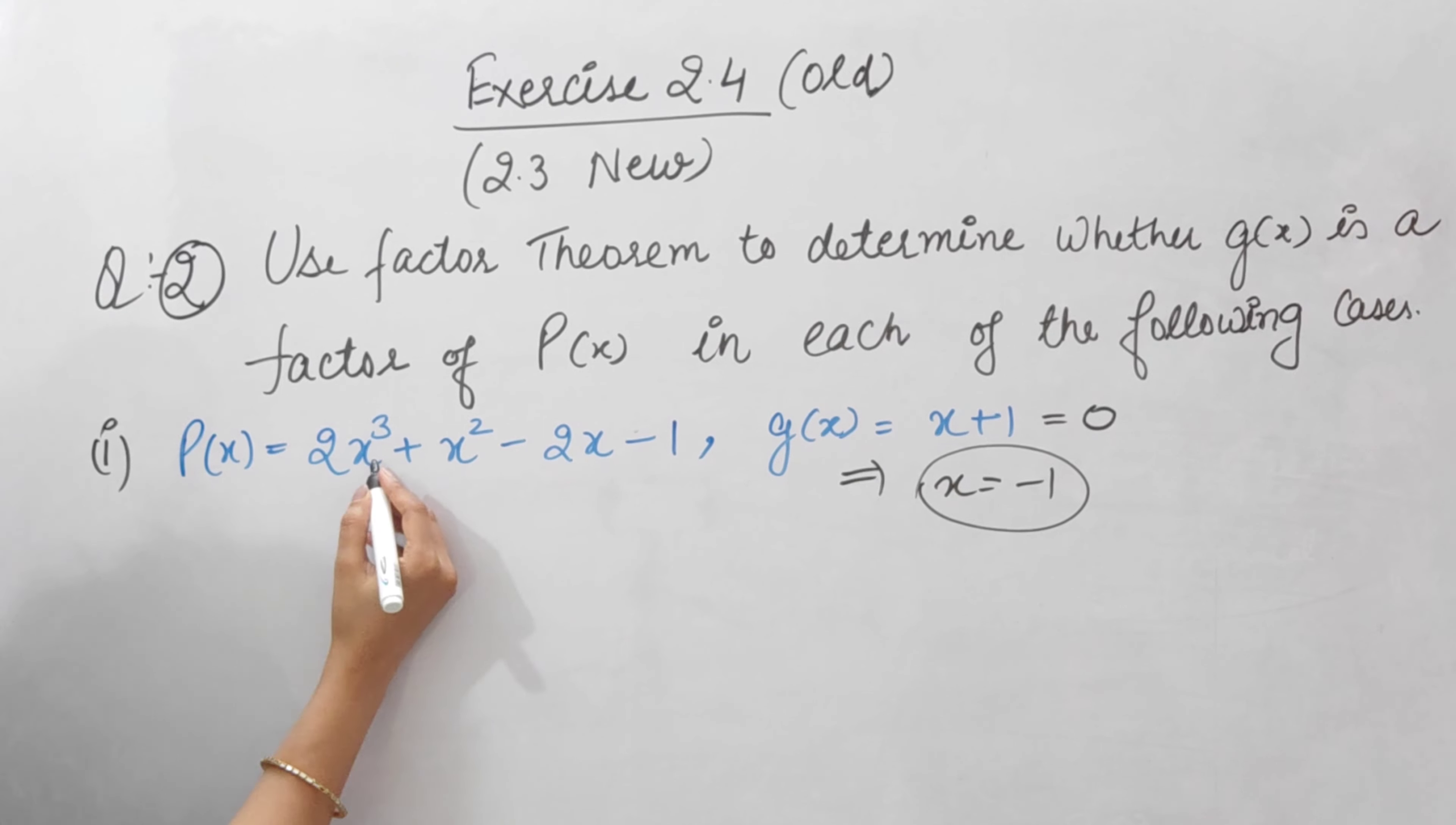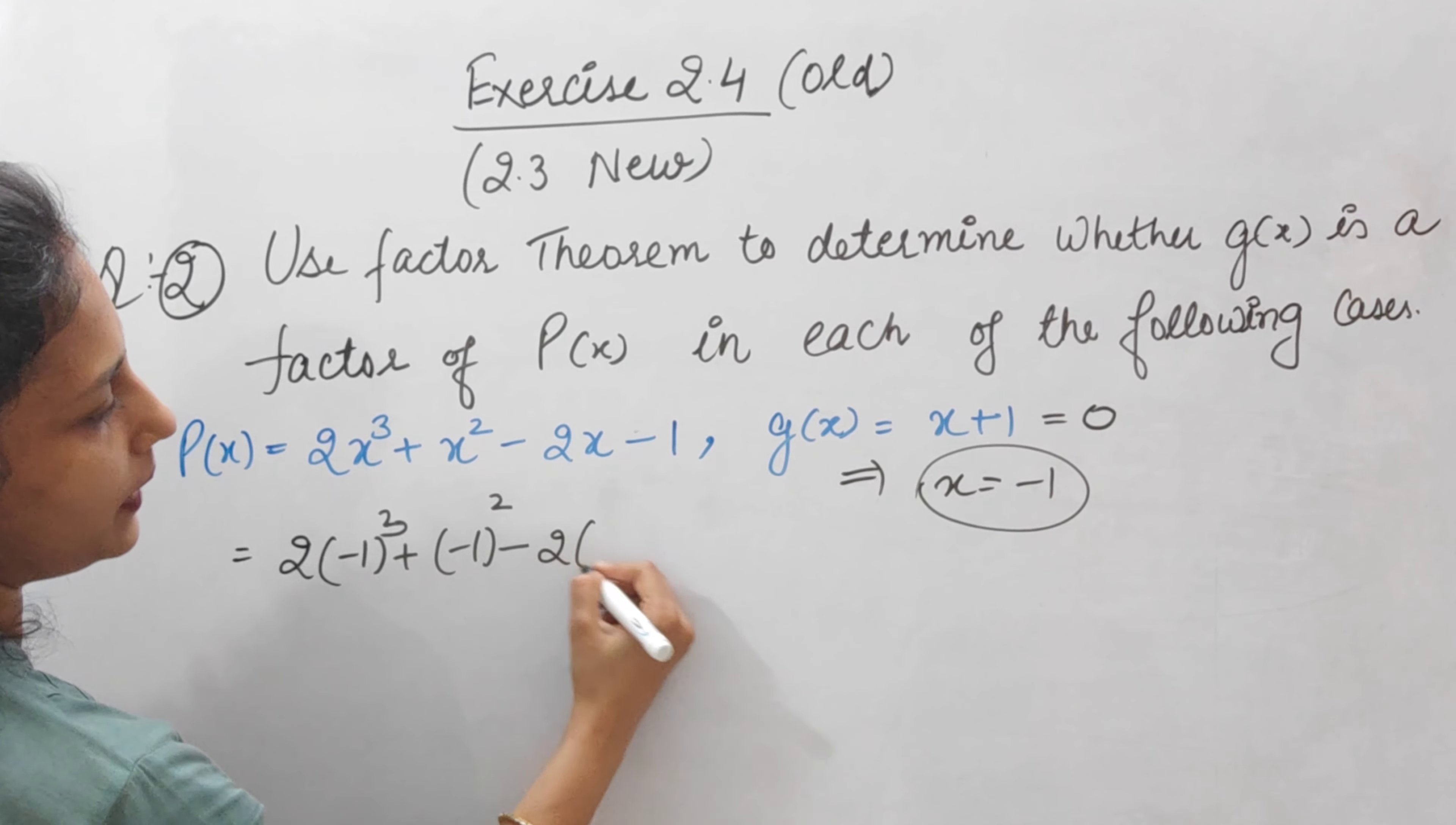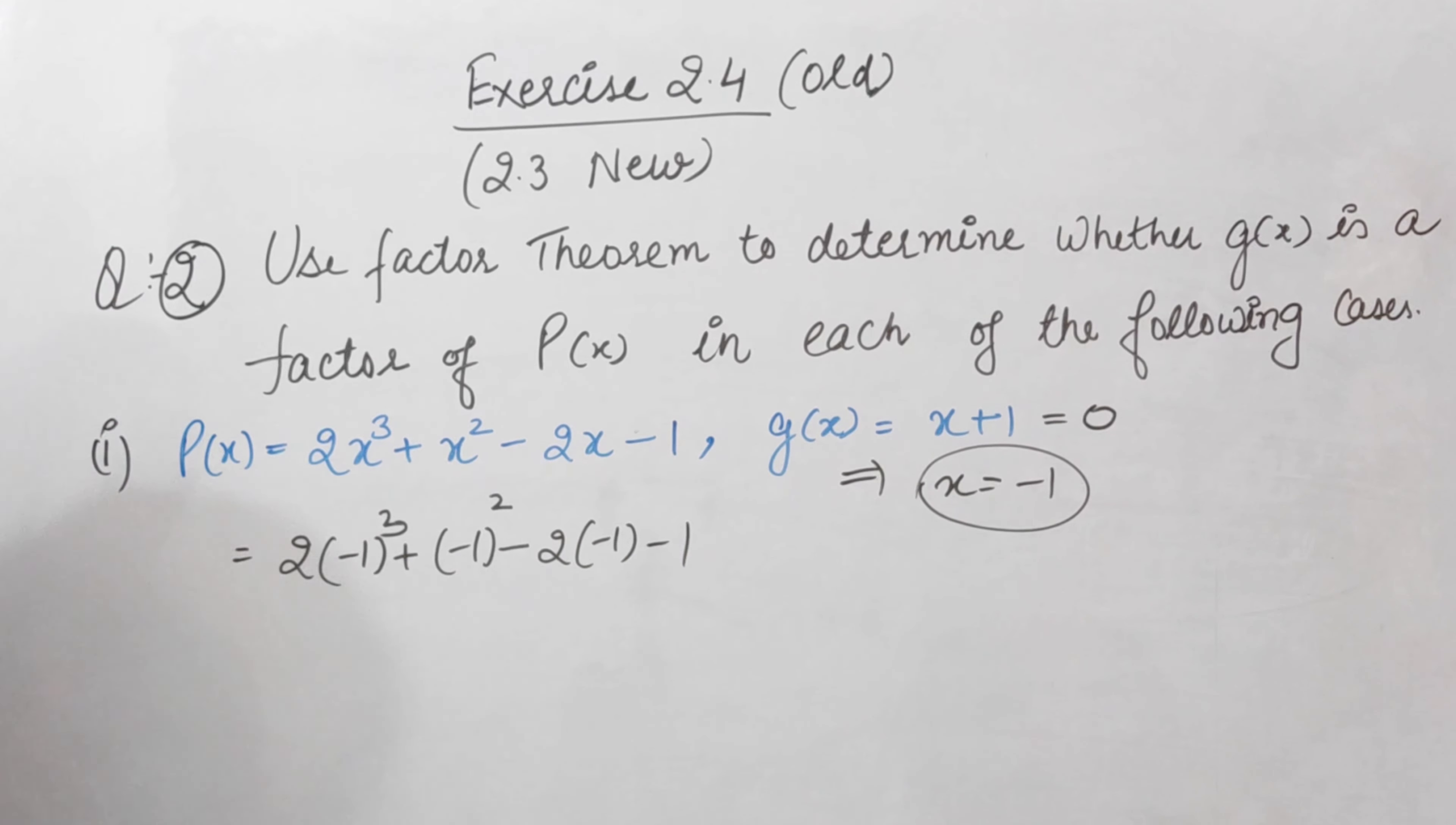So x will be equal to minus 1. P(-1) equals 2 times minus 1 cube plus minus 1 square minus 2 times minus 1 minus 1. Now, we will solve: minus 1 to power 3 is minus 1, square is plus 1, so here we will be plus 1. Minus minus is plus, so here we will be plus 2, and here we will be minus 1.